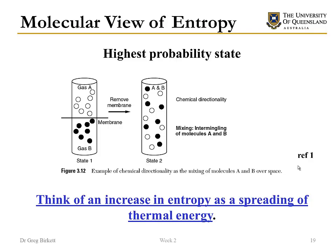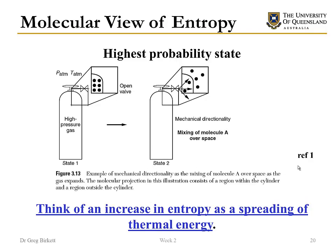Another way to think of this is that an increase in entropy is a spreading of thermal energy. A and B spread when they have the opportunity to spread the thermal energy they contain. Another common example is a high pressure tank: if we open the valve, gas escapes to access more states and to spread the energy contained within the high pressure tank.